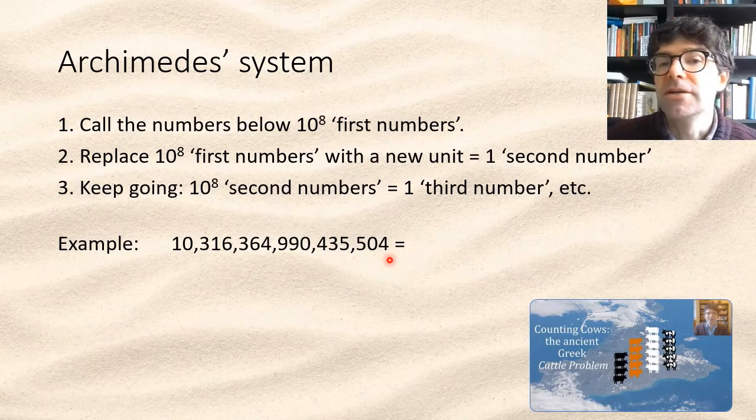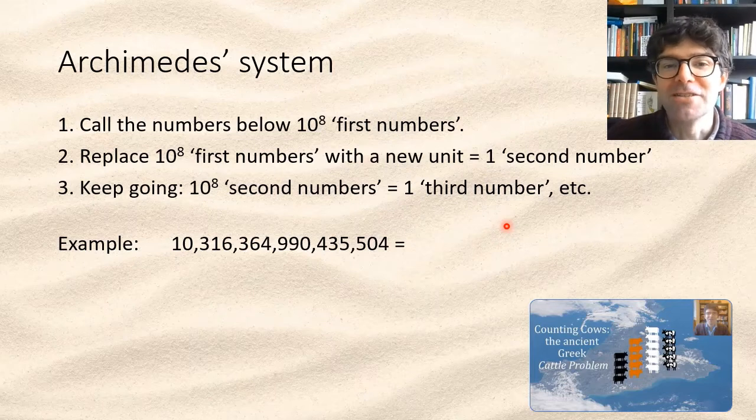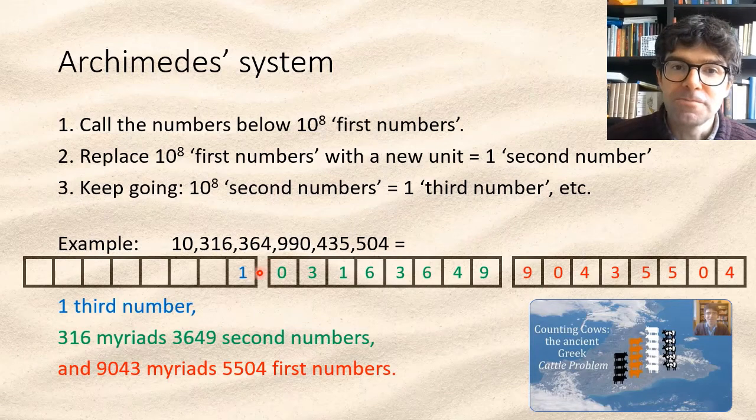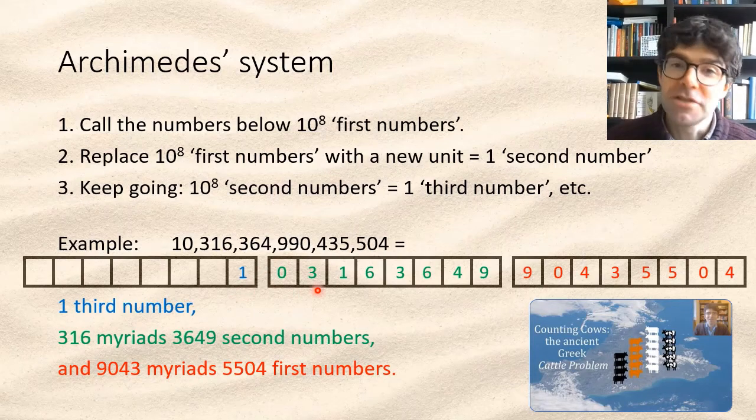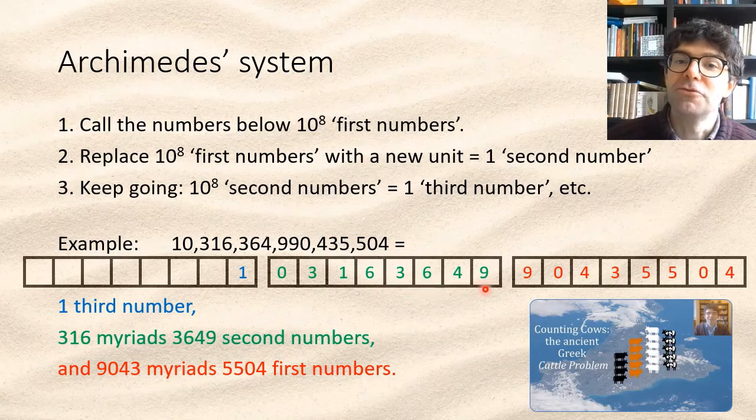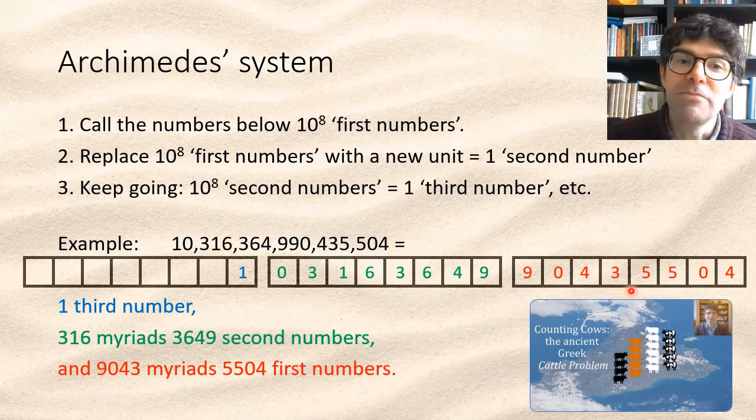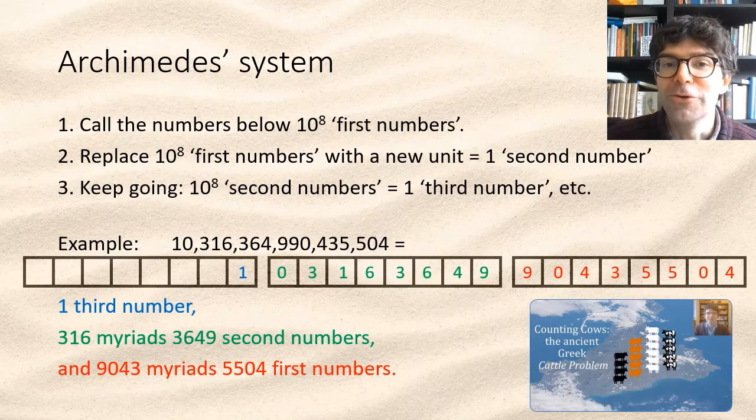So to express this in Archimedes' terms, we split it up, not in groups of three, which we tend to do today, but like this in groups of eight, and we call it one third number plus 316 myriads, 3649 second numbers plus 9043 myriads and 5504 first numbers.